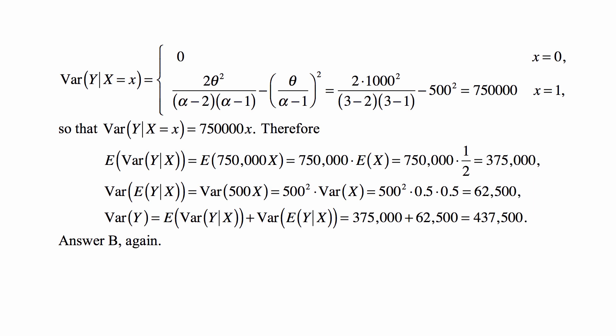Variance of X is 1/2 times 1/2, p times q, and q is also 1/2. If p is the probability of success and q is the probability of failure in the Bernoulli trial, the variance is pq. So that's 62,500.